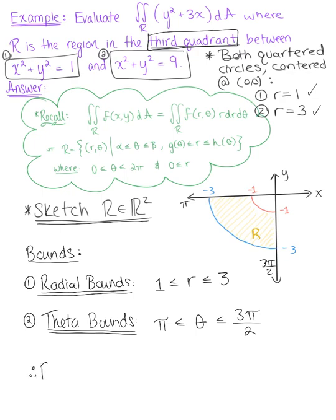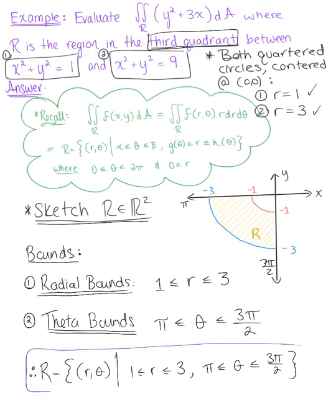Therefore, our region R is defined by the set of all ordered pairs (r, θ) where r is greater than or equal to 1, less than or equal to 3, and θ is greater than or equal to π, less than or equal to 3π/2.